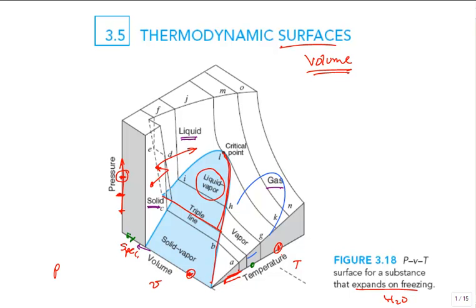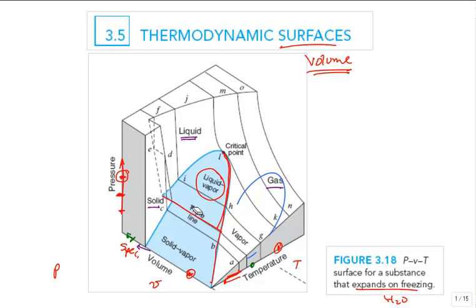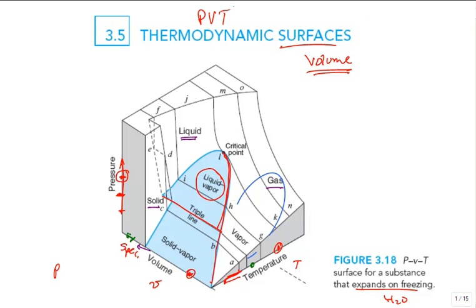The solid-vapor two-phase region is below the triple line — it's easier to see. There's a saturated solid line and a saturated vapor line defining that region. And there is one place where three phases can coexist: the triple line, which goes right in here. So we have single-phase surface areas, two-phase surface areas, and one line of three-phase equilibrium.